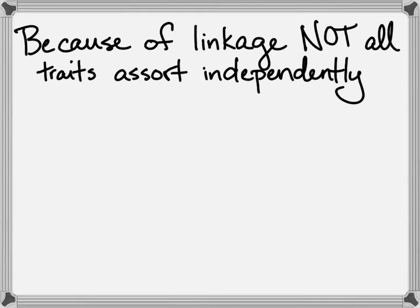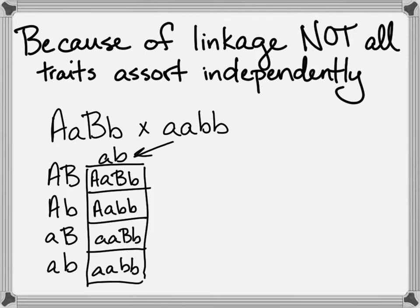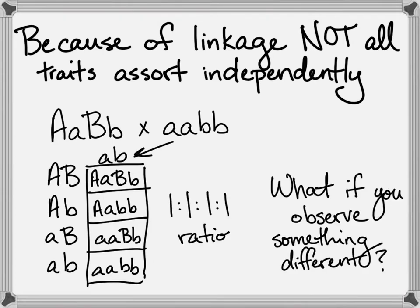What we see with linkage is basically we are breaking the law of independent assortment. This is an exception to the law of independent assortment. Because under the law of independent assortment, with a test cross like this, where one parent is heterozygous for two traits and you've got one parent that is recessive for both, that's the definition of a test cross. You would get this very simple dihybrid cross, because the recessive parent could only have one particular type of gamete. You would see a 1:1:1:1 ratio. But what if what you observe isn't a 1:1:1:1 ratio?